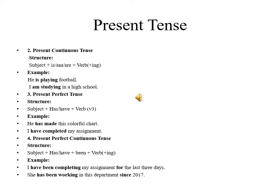Fourth type of present tense is present perfect continuous tense. Its structure is subject plus has or have plus been plus verb fourth form, that is ING. Example, I have been completing my assignment for the last three days. She has been working in this department since 2017.